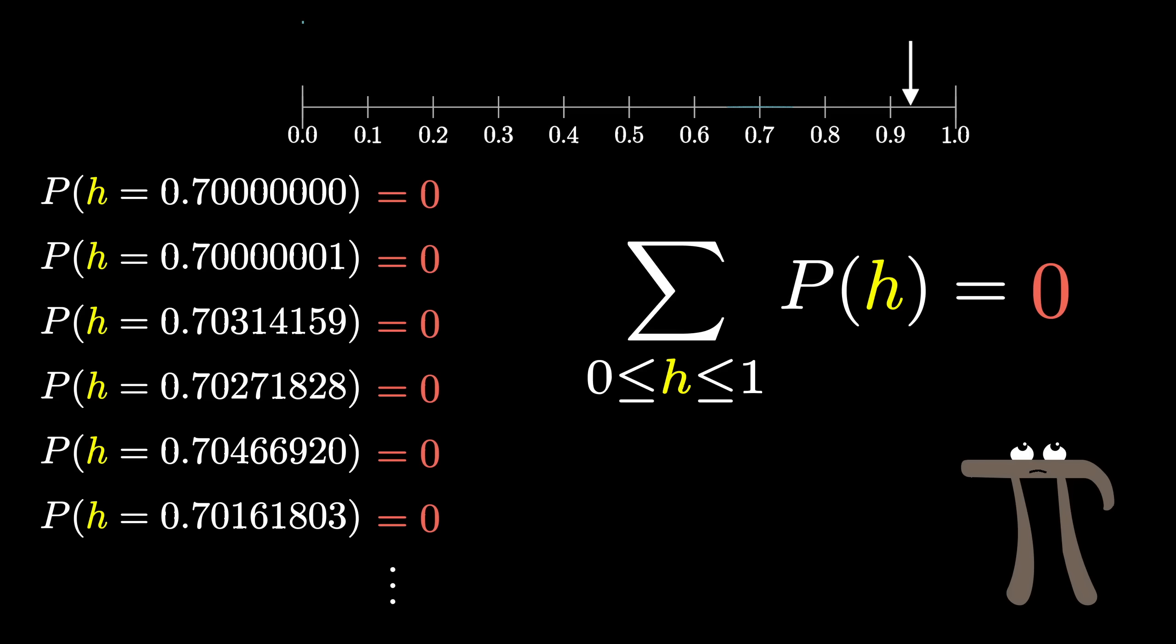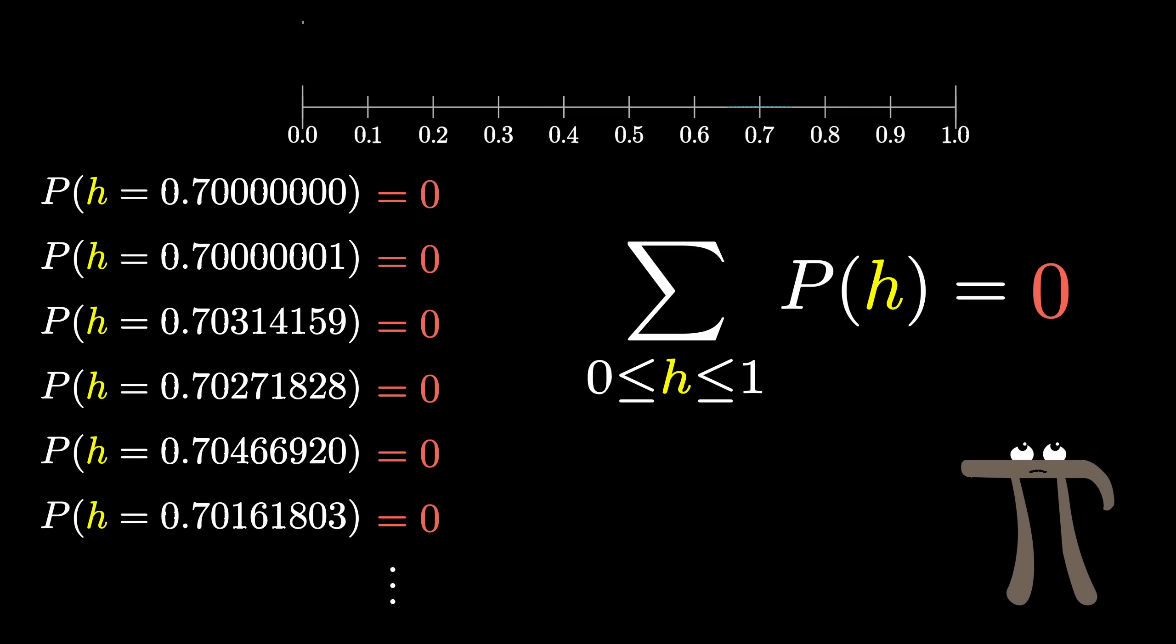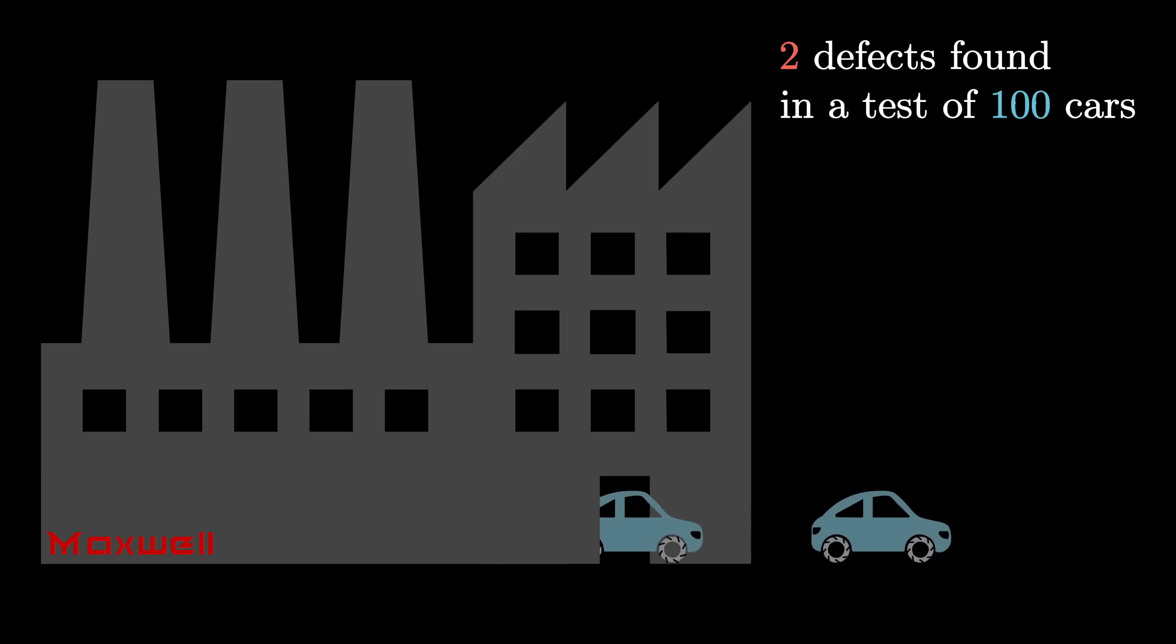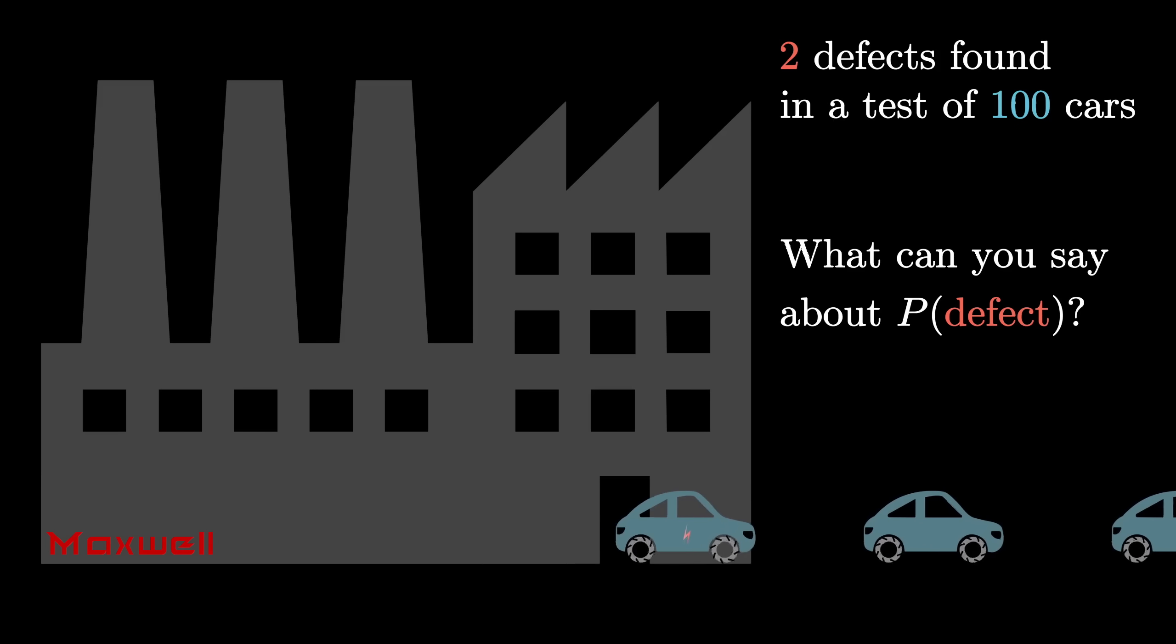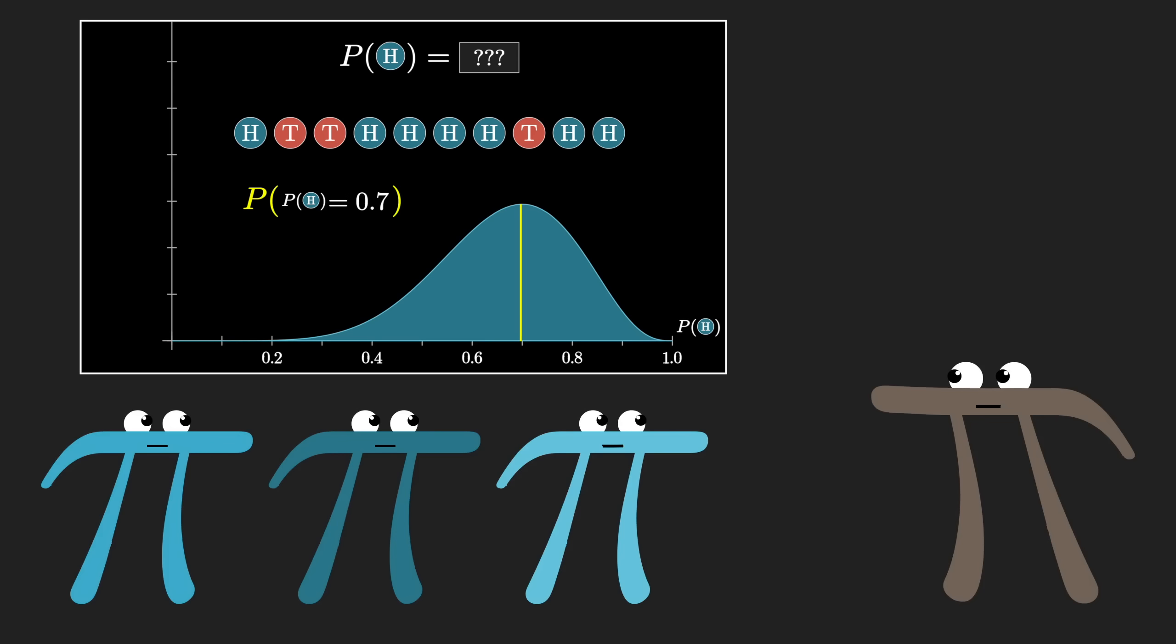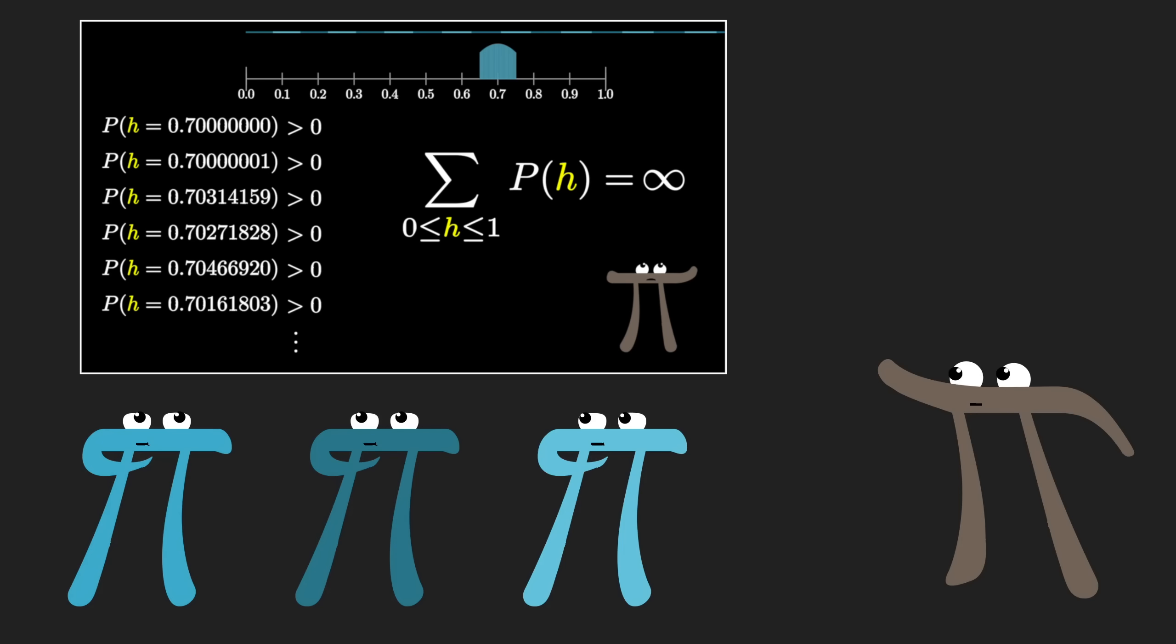So if these values can't all be non-zero, and they can't all be 0, what do you do? Where we're going with this, by the way, is that I'd like to talk about the very practical question of using data to create meaningful answers to these sorts of probabilities of probabilities questions. But for this video, let's take a moment to appreciate how to work with probabilities over continuous values and resolve this apparent paradox.